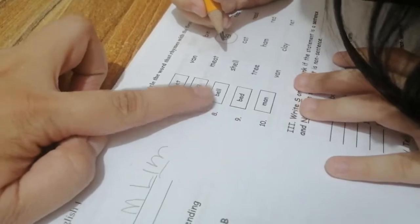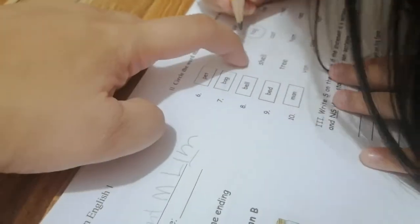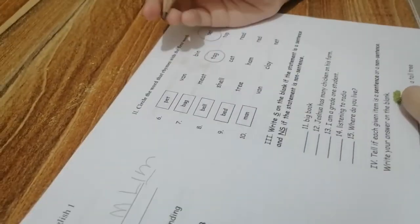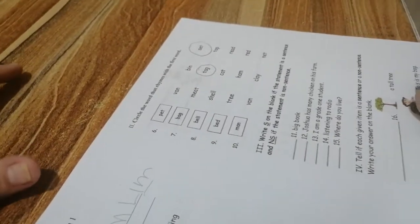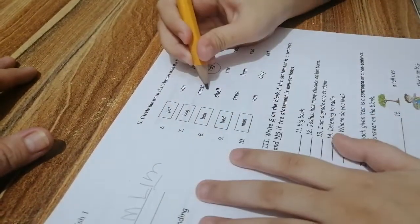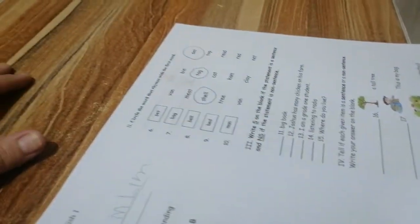Bell. Basahin mo muna ito. Bell. Cell. Shell. Shell. Cat. Read. Oh wait. With a E-L-L. Okay. I know. I know. I know. It's shell. Okay. Next.